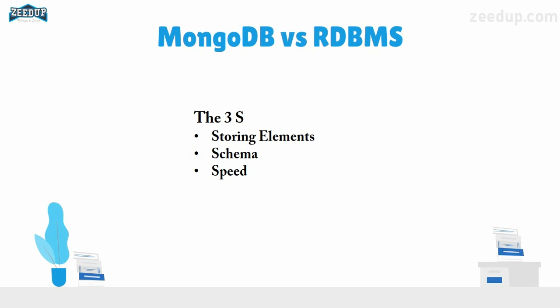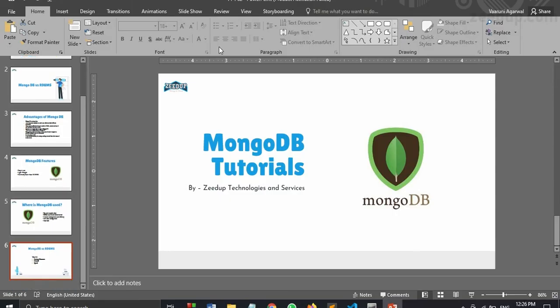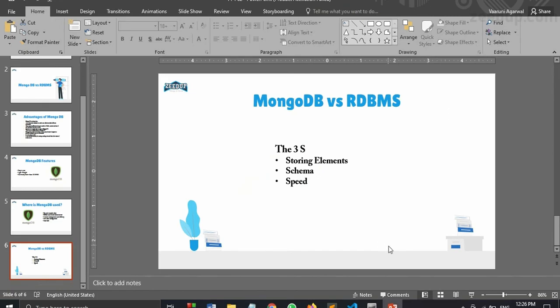For storing elements: in RDBMS we use tables, while in MongoDB we use documents and collections. For schema: in RDBMS there are multiple schemas used to create tables, while in MongoDB data is stored as key-value pairs in a JSON or XML-like format. For speed: MongoDB is around 100 times faster than the relational database management system. That is all for this video — thanks for watching.